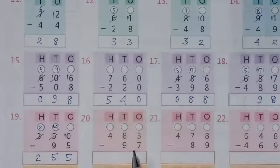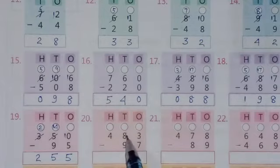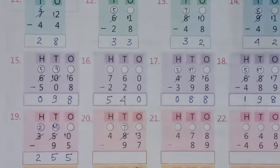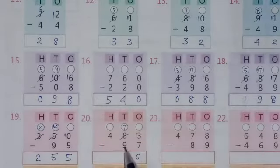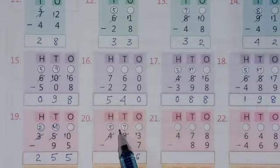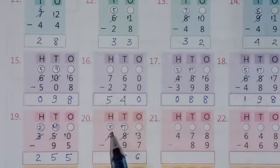Question number 20: 3 minus 7 is not possible, so borrow from this digit — this will become 7 and here will be 13. Now 13 minus 7 equals 6. Then 7 minus 9 is not possible, so borrow from this digit — this will become 3 and here will be 17. Now 17 minus 9 equals 8, and this 3 will repeat as it is.